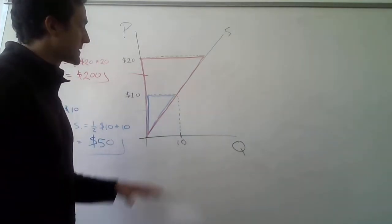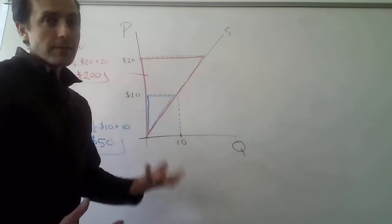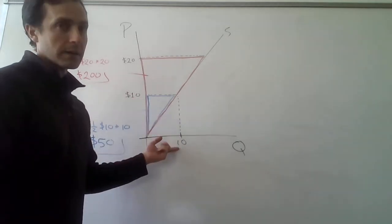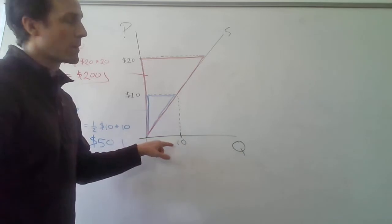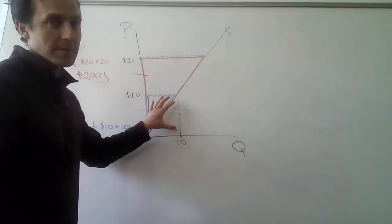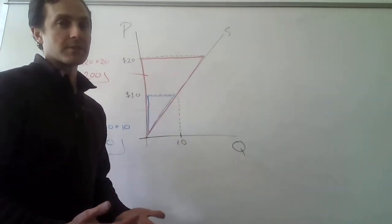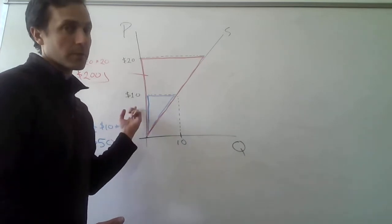And the reason why we do that is because, again, revenue is price times quantity, right? So this rectangle here, when the price is $10 and the quantity is $10, that rectangle there represents revenue that the firm is earning when they sell 10 units for $10 each.